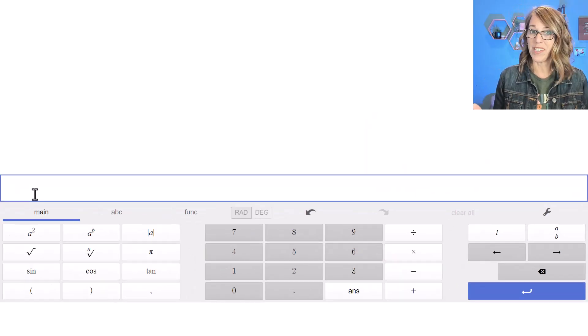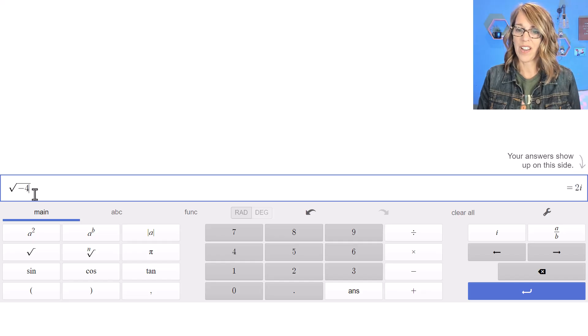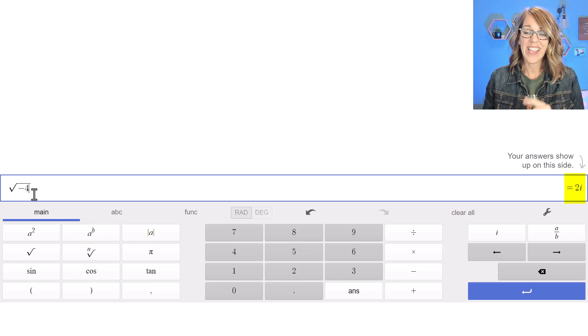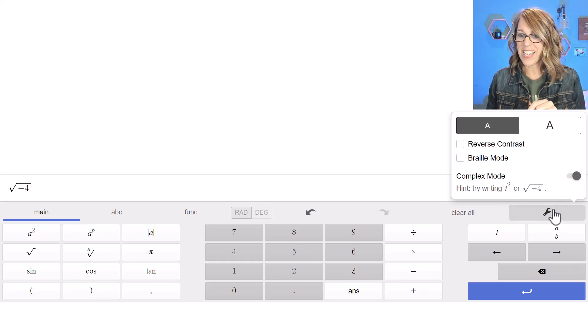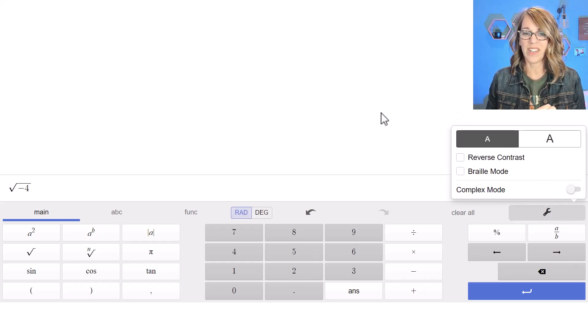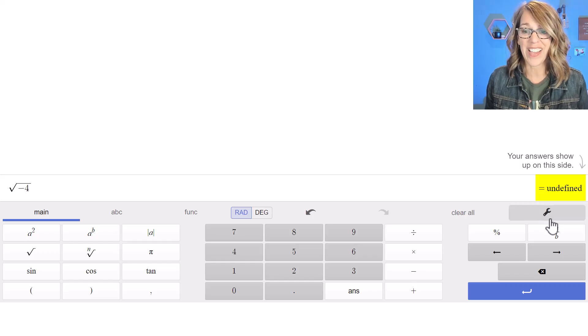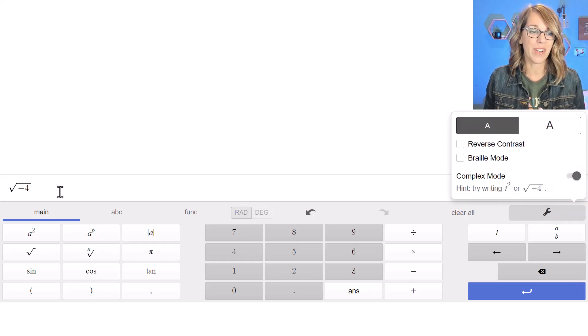Let's put our cursor in an empty cell and start with something like the square root of negative 4. Notice how it gives me that value 2i. If I were to put it back into the default mode it would show that value as undefined. Okay, back to complex mode.